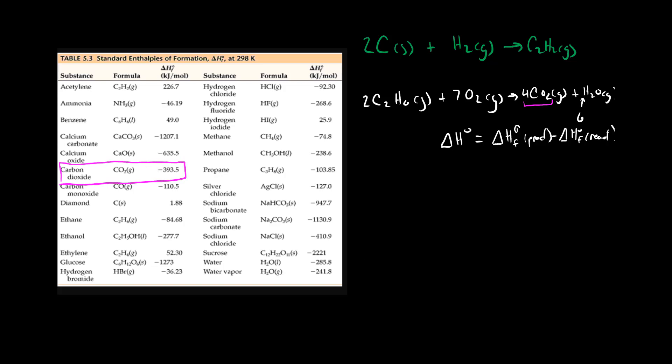It has an enthalpy of formation of negative 393.5 kilojoules per mole. And from our balanced reaction we have four of these. So we have four times this.